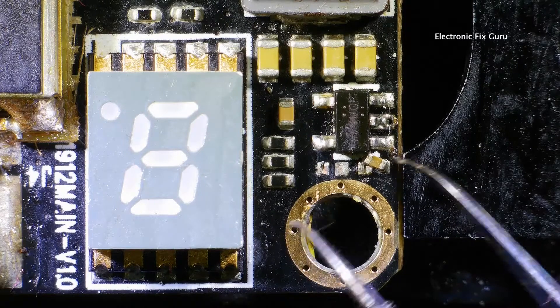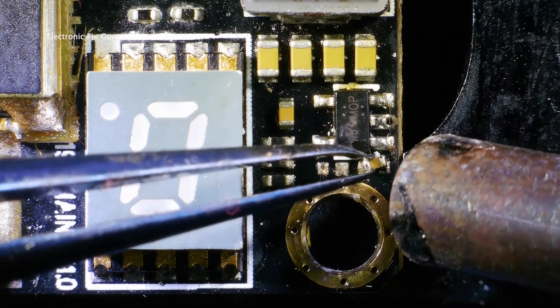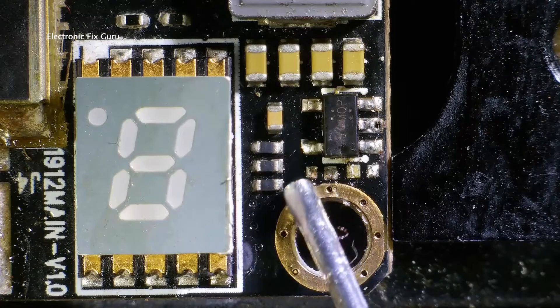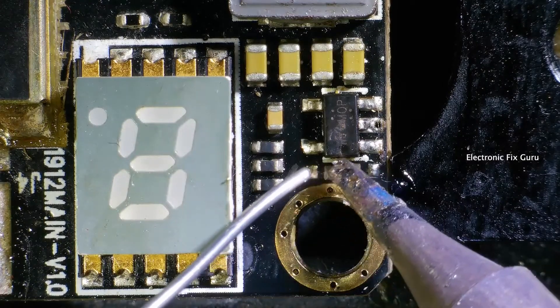Let's start from here, we have a misaligned capacitor. Carefully remove the misaligned capacitor. Add some flux, pre-tin solder pads, then put back the capacitor.